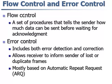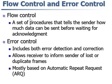Next, flow and error control. Flow control means it is a set of procedures that tells the sender how much data can be sent before waiting for the acknowledgement. That means the receiver sends an acknowledgement to the sender that it has received the data. Flow control tells how many frames can be sent to the receiver before sending the next data.